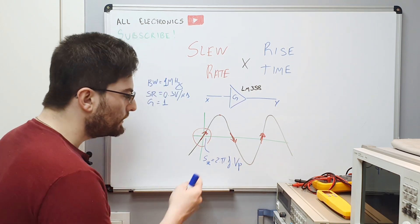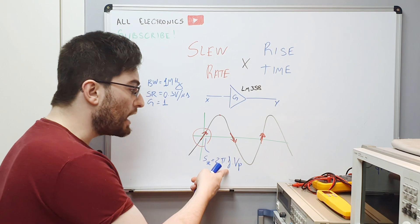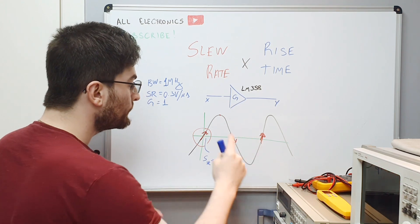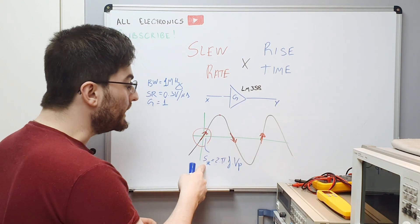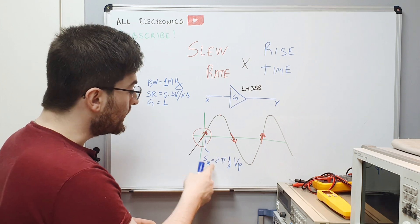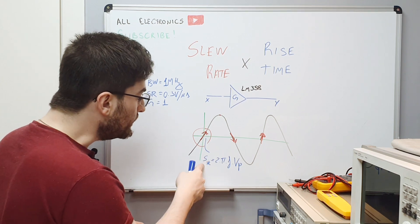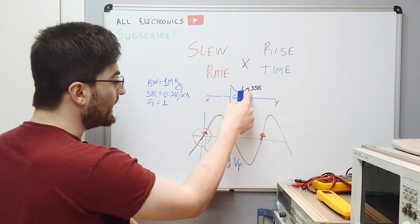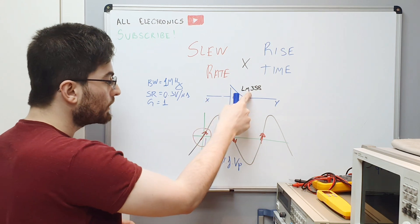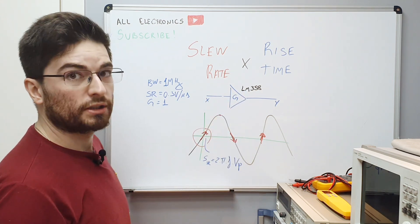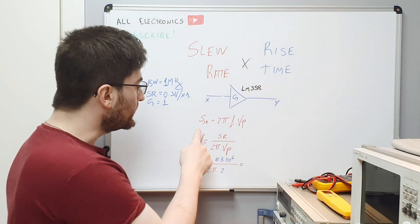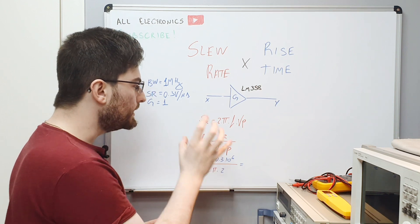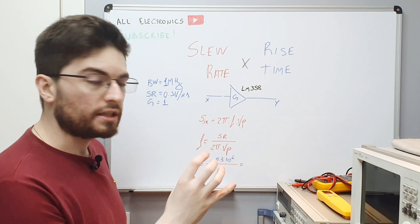Anytime the frequency is too large or the voltage swing too large, we can be slew rate limited. Because if the slew rate of the signal is greater than 0.3 V/µs in this case, we're going to have distortion at the output. Using the slew rate of the signal, we can see the bound between small signal and large signal.